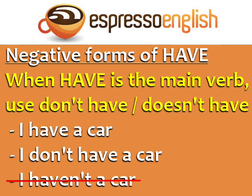When have is the main verb, meaning possession, then the negative form is don't have and doesn't have. For example: I have a car. I don't have a car. It's incorrect to say I haven't a car.